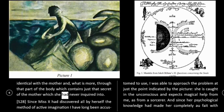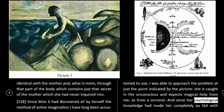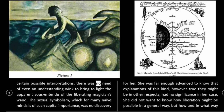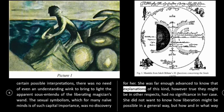528: Since Miss X had discovered all by herself the method of active imagination I have long been accustomed to use, I was able to approach the problem at just the point indicated by the picture — she is caught in the unconscious and expects magical help from me, as from a sorcerer. And since her psychological knowledge had made her completely at ease with certain possible interpretations, there was no need of even an understanding wink to bring to light the apparent significance of the liberating magician's wand. The sexual symbolism, which for many naive minds is of such capital importance, was no discovery for her. She was far enough advanced to know that explanations of this kind, however true they might be in other respects, had no significance in her case.